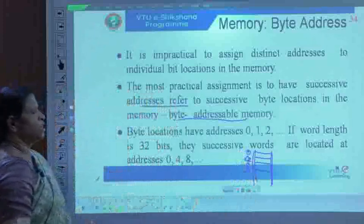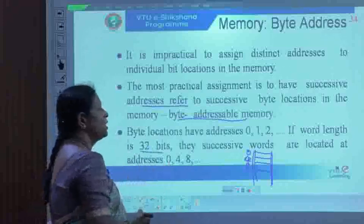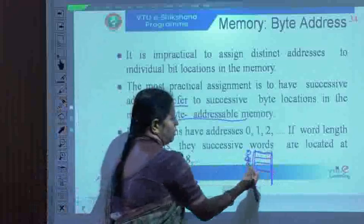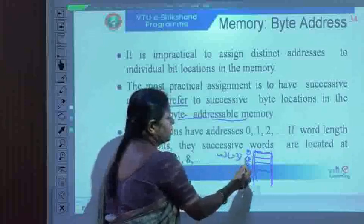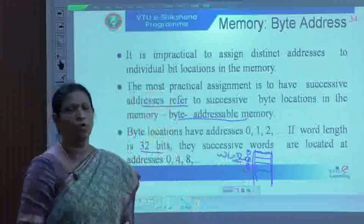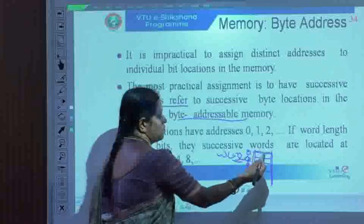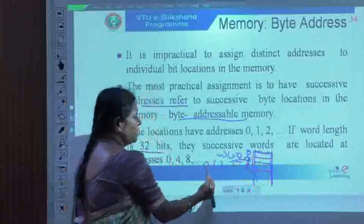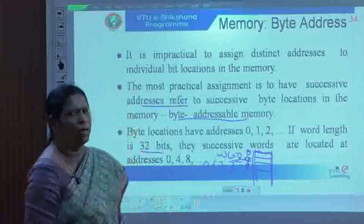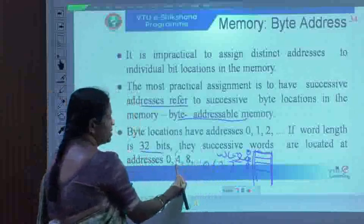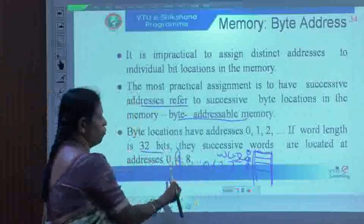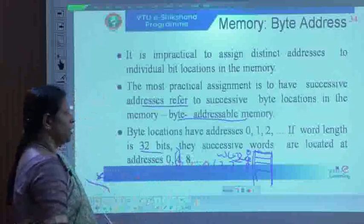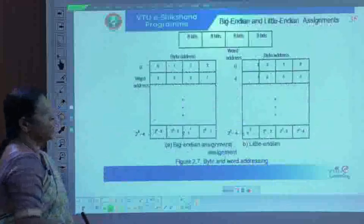If the word length is 32 bits, successive words are located at addresses 0, 4, 8, and so on. That is because 32 bits equals 4 bytes, so each word occupies 4 successive byte locations. The first word occupies bytes 0 through 3, the second word begins at 4, then 8, then 12 — this is byte addressability.